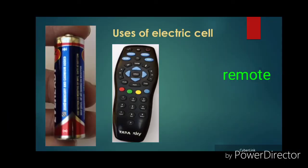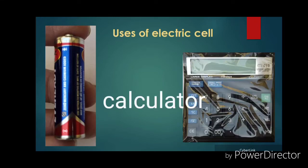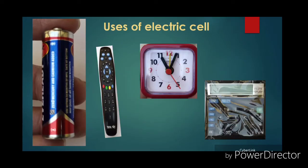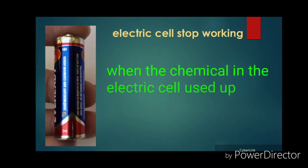There are so many places in our day-to-day life where we use electric cells: in remote controls, clocks, and calculators. So electric cells are useful in our day-to-day life. Electric cells stop working when the chemicals in the electric cell are used up.